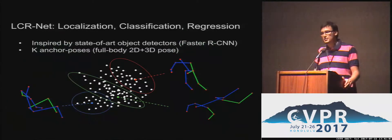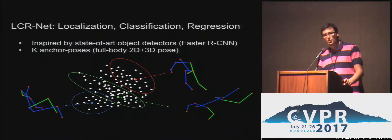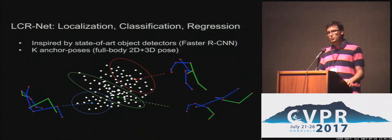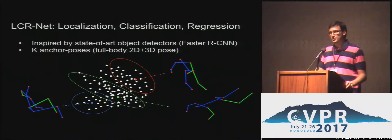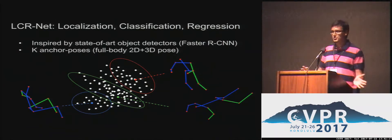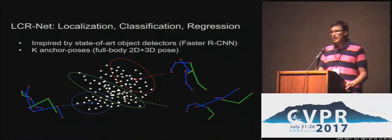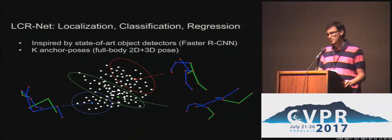Our method is inspired by recent state-of-the-art object detectors such as Faster RCNN. Instead of classifying objects, we classify human poses. To do so, we define a set of K pose classes that correspond to a full body 2D and corresponding 3D pose. We call these the K anchor poses, and these are obtained by simply clustering a human pose space.